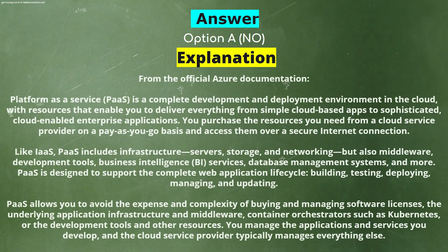Explanation. From the official Azure documentation: Platform as a Service is a complete development and deployment environment in the cloud with resources that enable you to deliver everything from simple cloud-based apps to sophisticated cloud-enabled enterprise applications. You purchase the resources you need from a cloud service provider on a pay-as-you-go basis and access them over a secure internet connection. Like IaaS, PaaS includes infrastructure, servers, storage, and networking, but also middleware, deployment tools, business intelligence services, database management systems, and more.